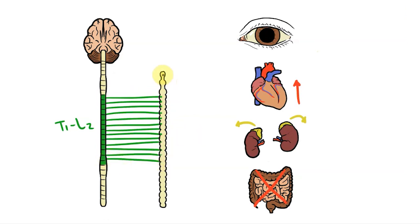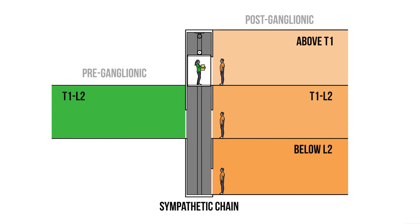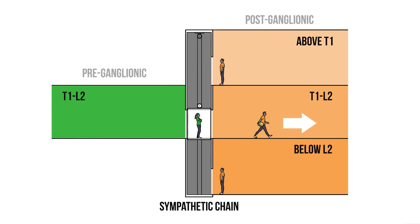This is where the sympathetic chain comes in. Essentially, the sympathetic chain is like an elevator that runs the length of the body. Preganglionic fibres can only enter the elevator between the levels of T1 to L2. However, once they've entered the elevator they're free to travel to any spinal level. Once they've arrived at the right level, they can pass the message on to a postganglionic fibre that heads out into the body. This means that despite only starting in one section of the spinal cord, our sympathetic nerves can reach organs at every level of the body.